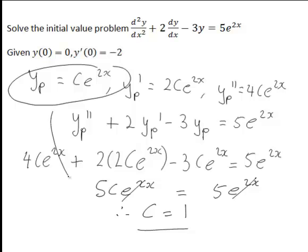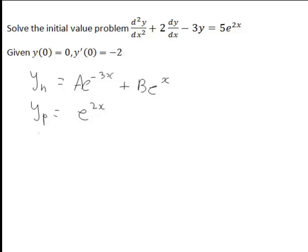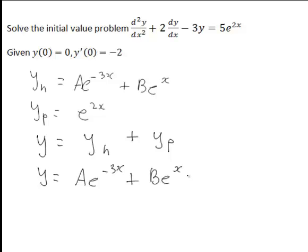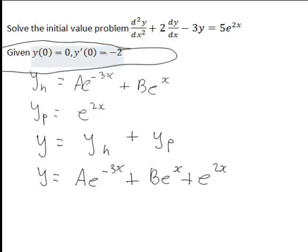Since c equals 1, yp equals e to the 2x. The general solution y is then yh plus yp, giving y equals ae to the negative 3x plus be to the x plus e to the 2x. If there were no initial conditions, that would be the complete answer. But the two initial conditions allow us to solve for the arbitrary constants a and b.